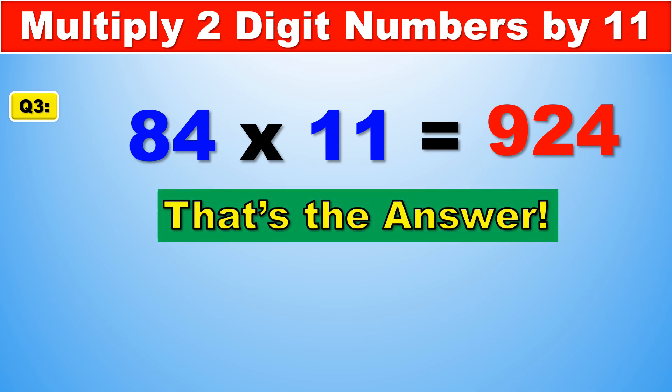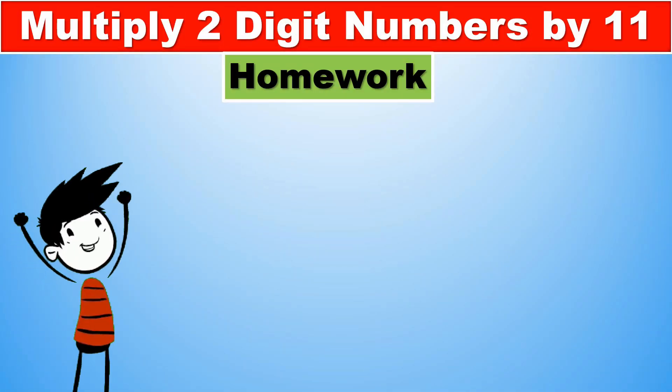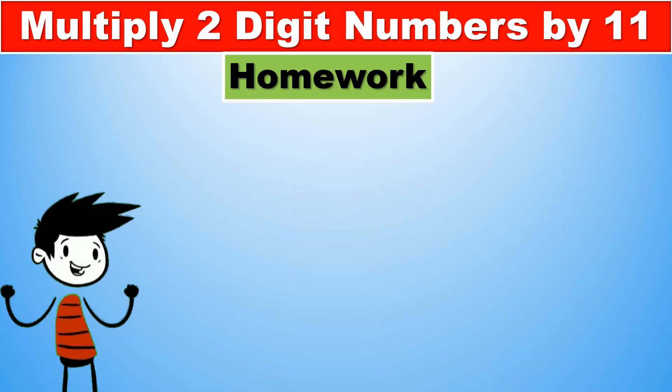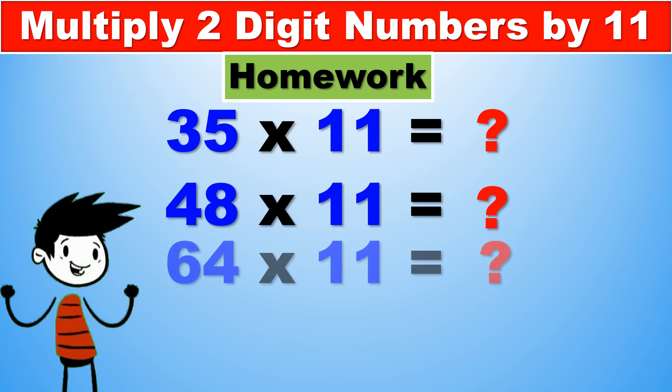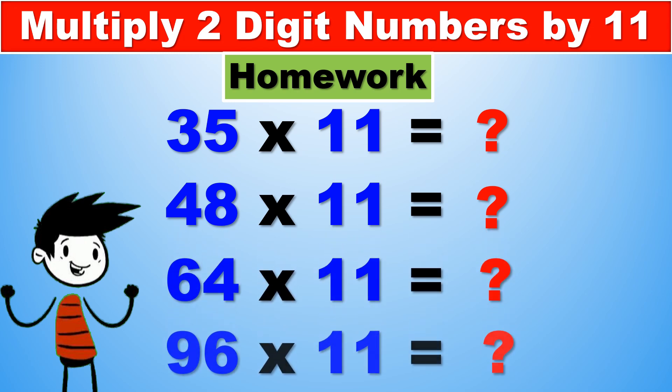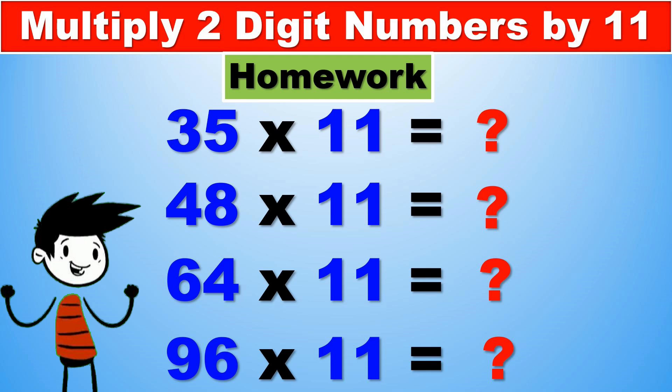So now that you know how to do this super simple trick in order to easily multiply any two-digit number by 11, it's time for some homework. Try to figure out what 35 times 11 is, what 48 times 11 is, what 64 times 11 is, and what 96 times 11 is. Make sure to comment down your answers in the comment section below, and for your convenience, the correct answers to all these homework problems will be in the description below.